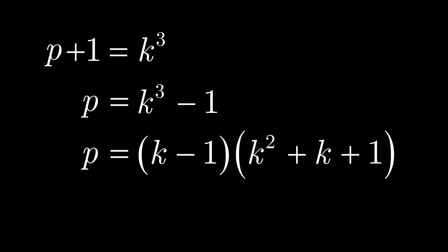But wait a minute. p is a prime number, and therefore its only whole number factors are 1 and itself. So, one of our two factors must be equal to 1, and the other must be equal to p.